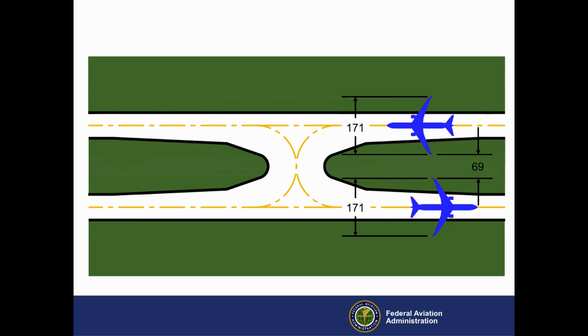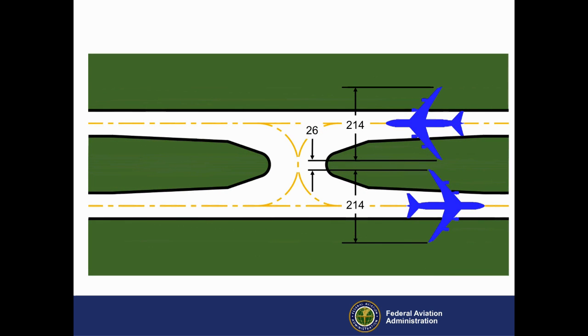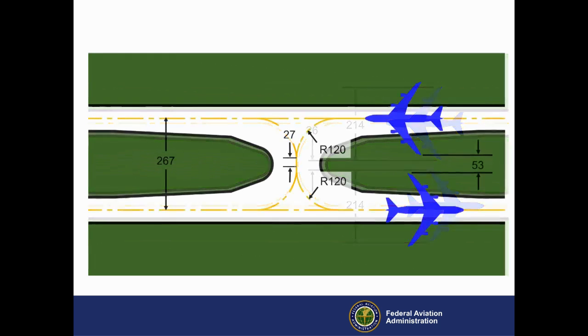If the airplane design group is ADG 5, and the airplanes with a maximum wingspan of 214 feet are again placed adjacent to each other on the parallel taxiways, the wingtip clearance would be only 26 feet, well below the required 53 feet. In this case, the required wingtip clearance for the ADG governs the design of the parallel taxiways, so the centerline to centerline separation is 267 feet, as shown in this updated design.